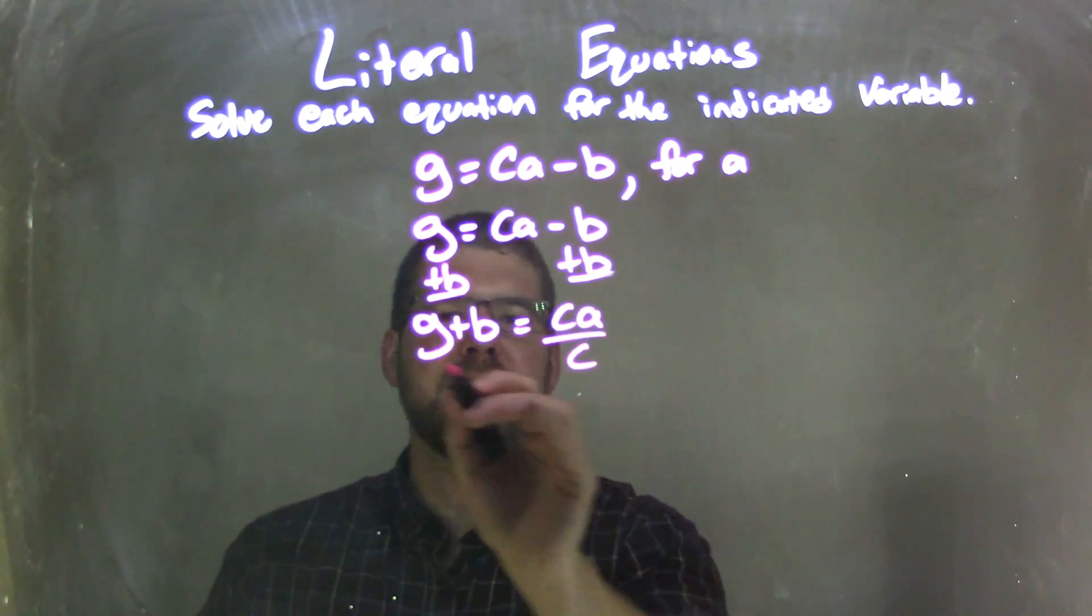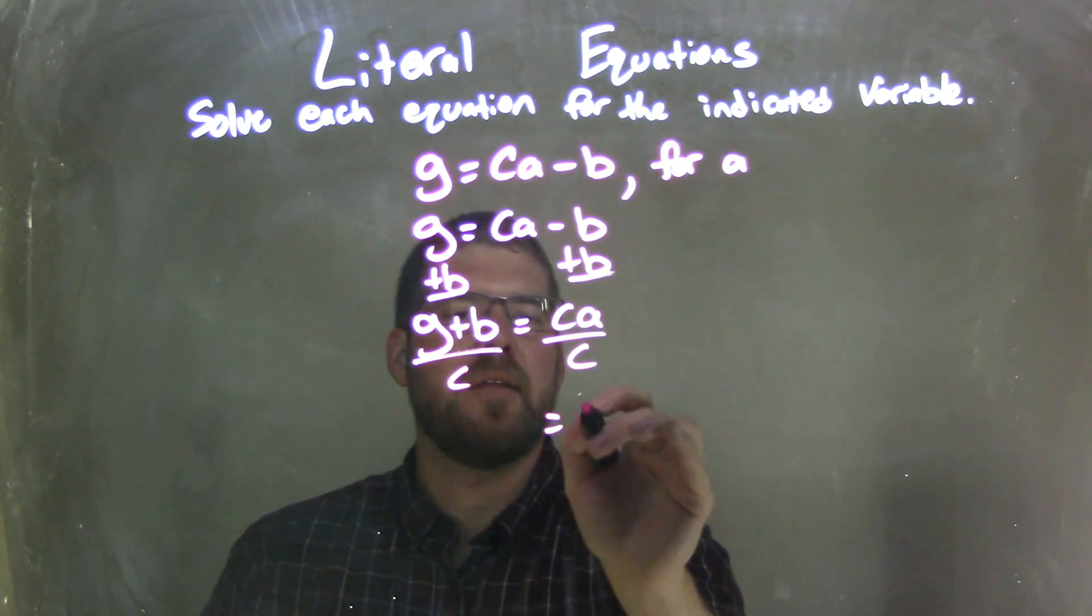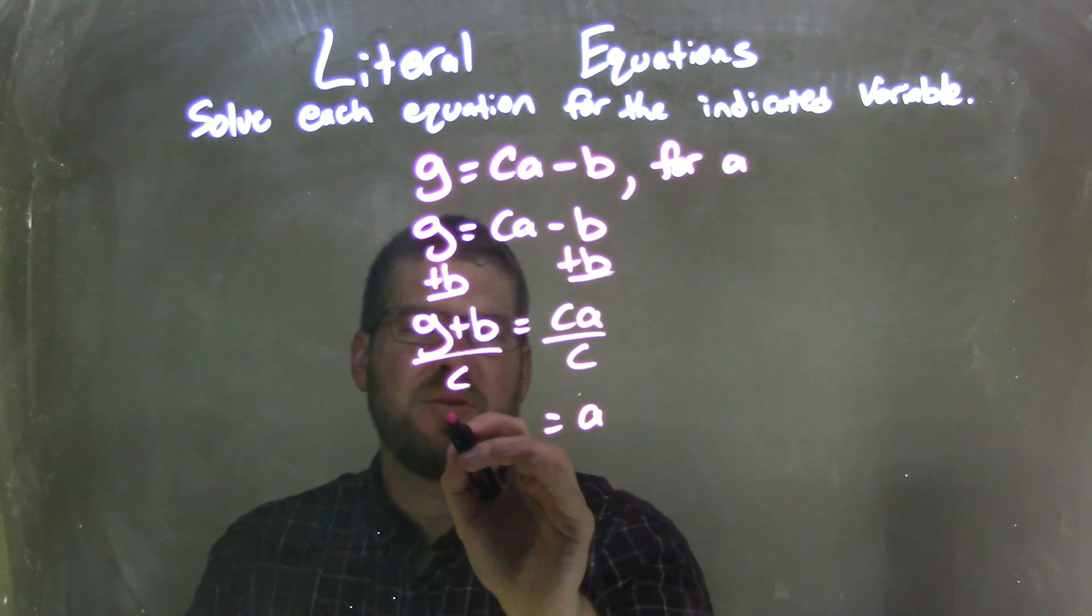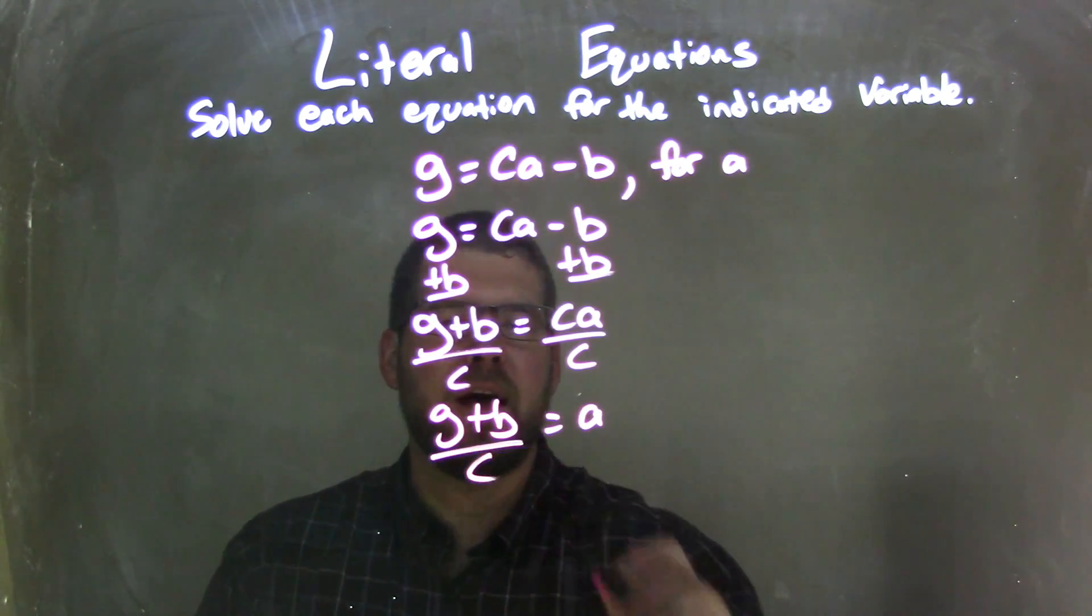From there, I'm going to divide by C to both sides. That eliminates the C's on the right, giving me A by itself. And then there's no like term, so we're basically done here. G plus B over C on the left.